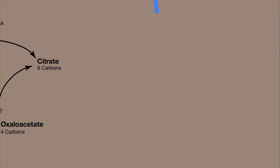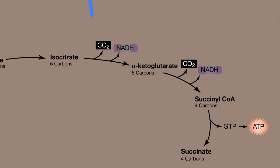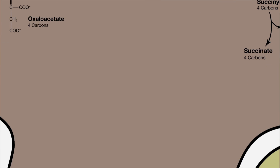After a few rearrangements, citrate loses one of its carbons, creating a five-carbon structure and carbon dioxide as a byproduct. This also adds a hydrogen to NAD+, creating NADH. This five-carbon structure then loses another carbon, creating another carbon dioxide molecule, another NADH, and a four-carbon structure. Modification of this new four-carbon structure releases enough energy to add an inorganic phosphate to GDP, creating GTP, which eventually will produce an ATP. Oxidation of this four-carbon structure will release two protons, which are transferred to FAD, creating FADH2.